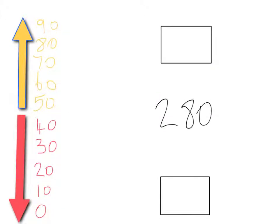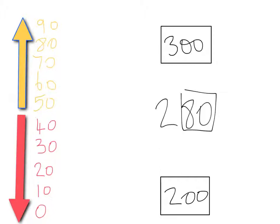We'll now move on to rounding numbers to the nearest hundred, and we're going to do this with two hundred and eighty. The multiples that two hundred and eighty lies between are two hundred and three hundred. Similarly to before, we now look at the tens digit. Here is eighty, and we can see that eighty rounds upwards. So two hundred and eighty rounded to the nearest hundred gives you three hundred.